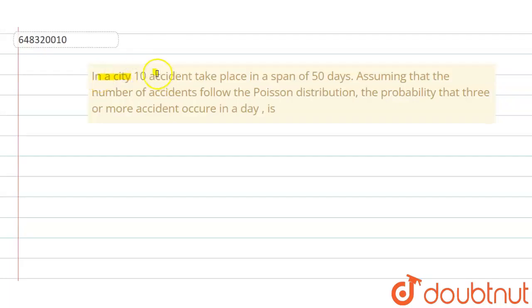Given that in a city, 10 accidents take place in a span of 50 days, assume that the number of accidents follow the Poisson distribution. Then the probability that three or more accidents occur in a day is...